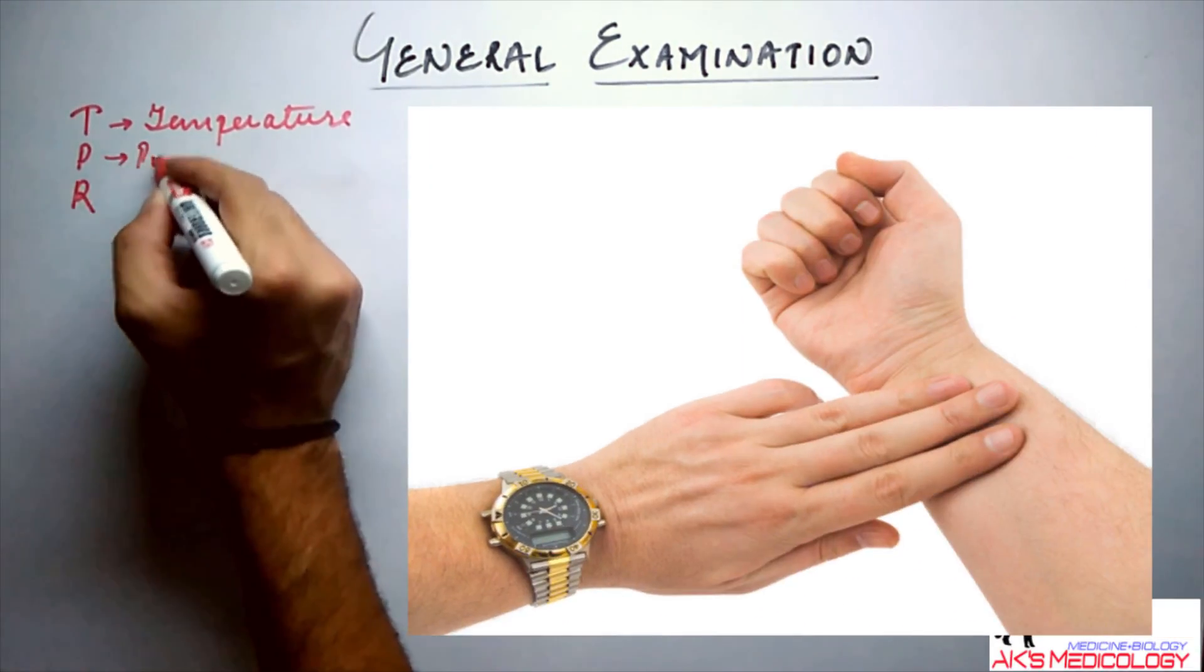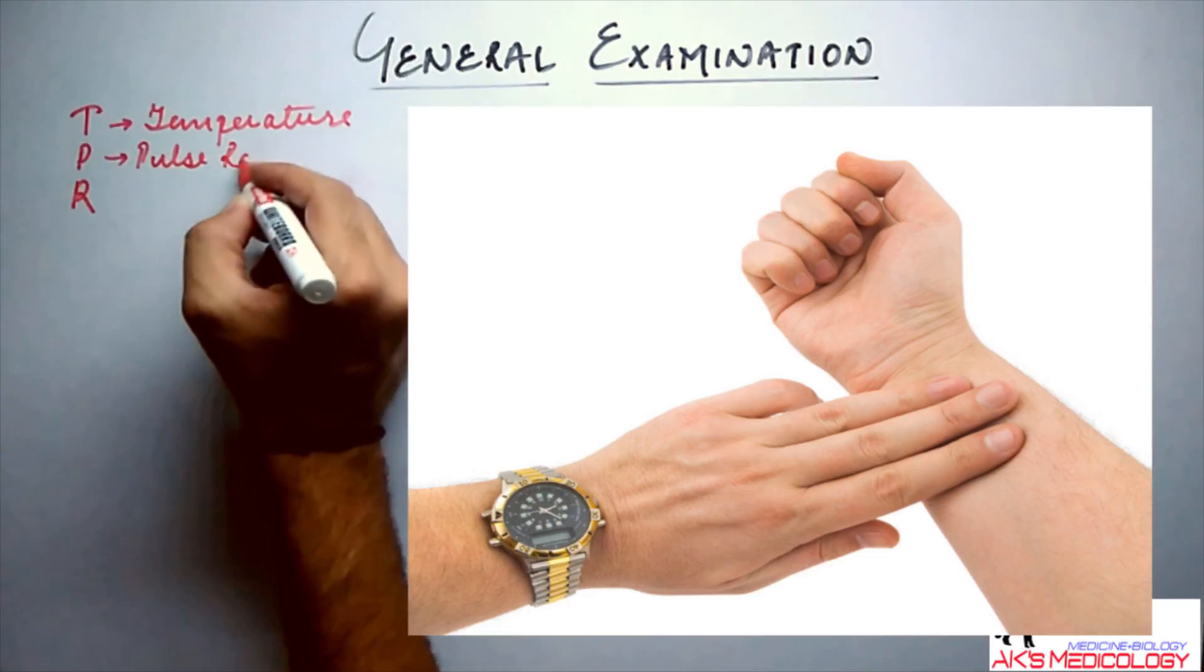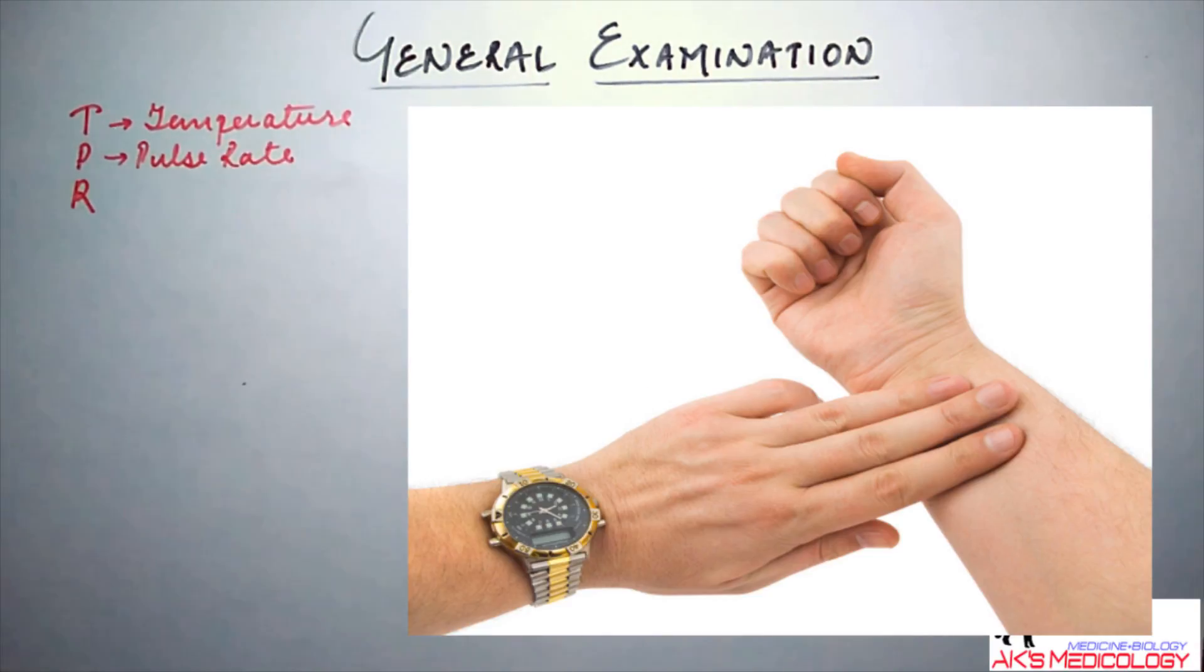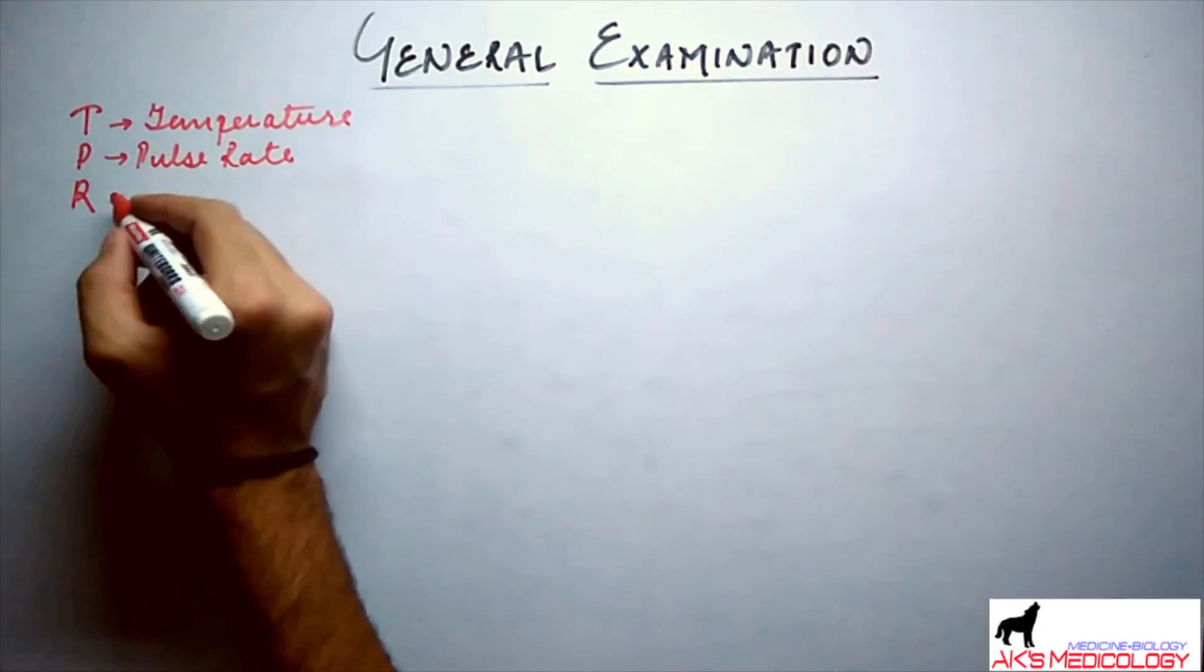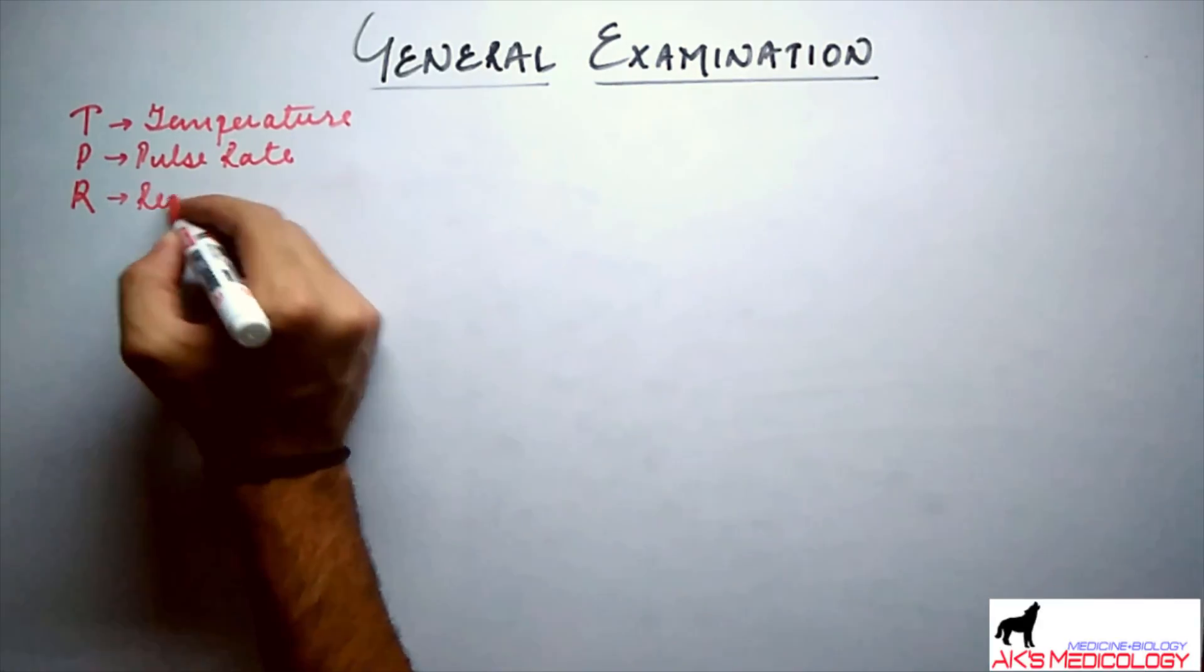P here stands for the pulse rate which is to be monitored by examining the radial artery, and R stands for the respiratory rate.